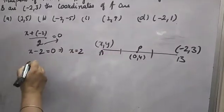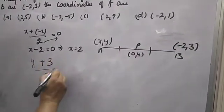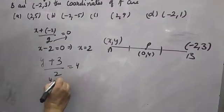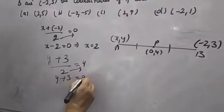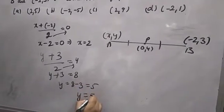Y-coordinate: (Y + 3)/2 = 4. Y + 3 = 4 times 2, which is 8. Y = 8 - 3 = 5. So the y-coordinate of A will be 5.